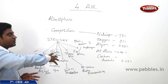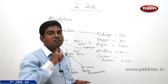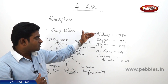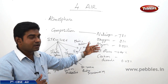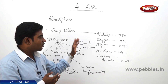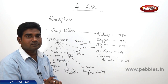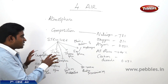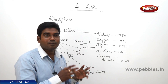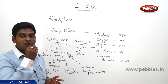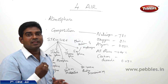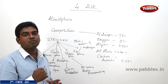Atmosphere is a blanket of air surrounding the entire planet. It is composed of nitrogen, oxygen, carbon dioxide, argon and all the other gases. The major chunk is nitrogen followed by oxygen and carbon dioxide and argon, and it has a structure of five layers as we discussed. Atmosphere is one of the most essential elements for every human to survive on this planet.